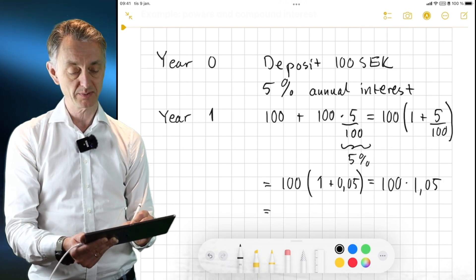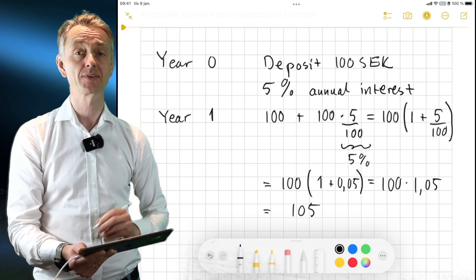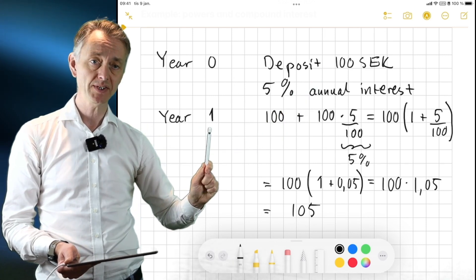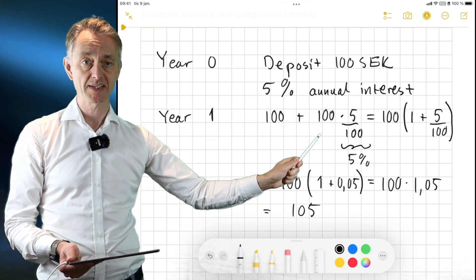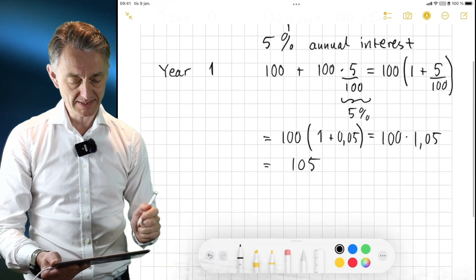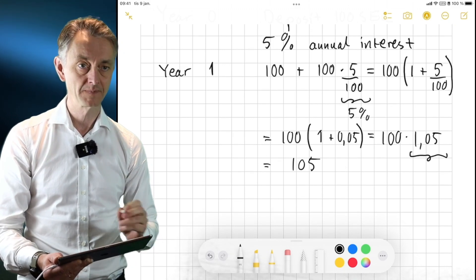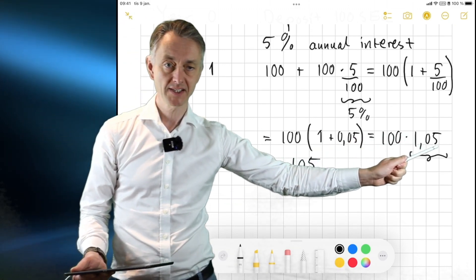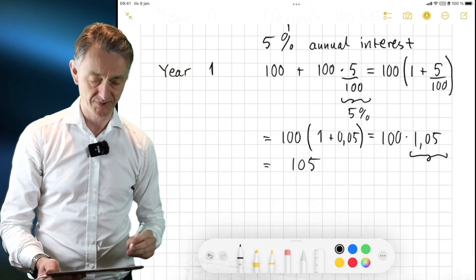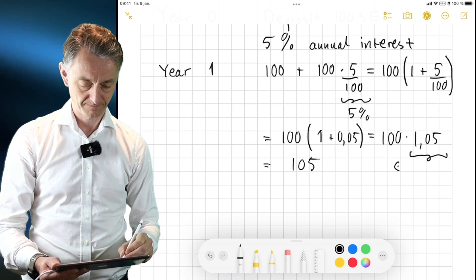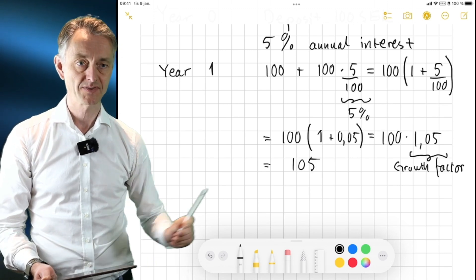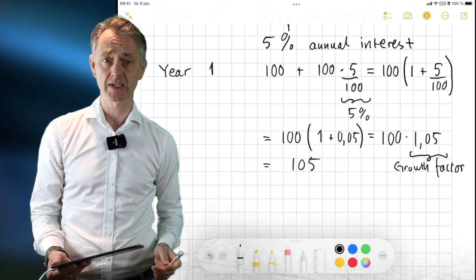And this is equal to 105 kroner. So I came in year zero and deposited 100. After one year, I still have the 100 plus the interest payment. And so now I have 105 kroner. And we can see that this thing here, this is what I multiplied my capital with. So this is called the growth factor. So it's by this much my money grows every year.